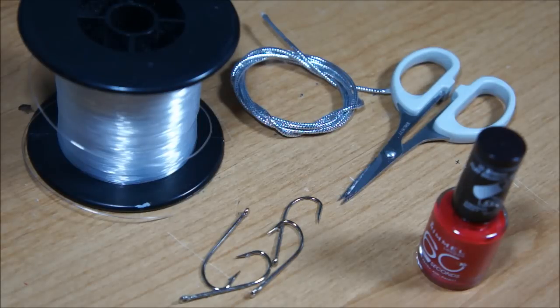So for material and tools for these lures I'm using 35 pound monofilament line, I've got four O'Shaughnessy hooks size 2-0, these are just nickel plated,